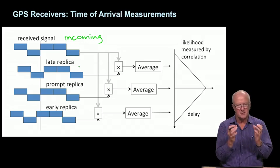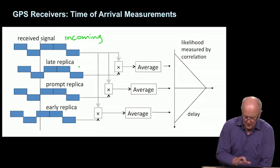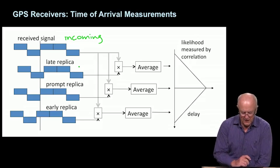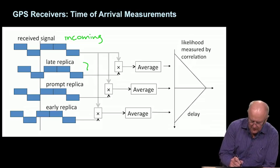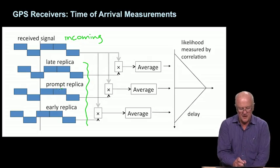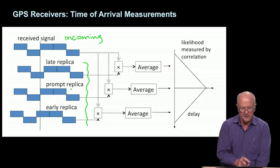Here we have the incoming signal and the replicas. We try to put one promptly on top of the incoming, with two shoulders: the early replica a little bit early, and the late replica a little bit late, not even by a whole chip.